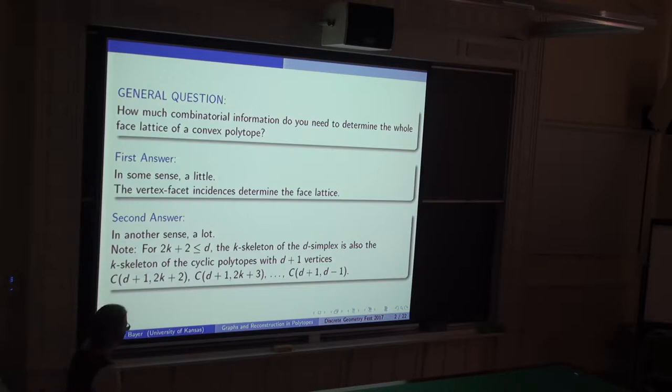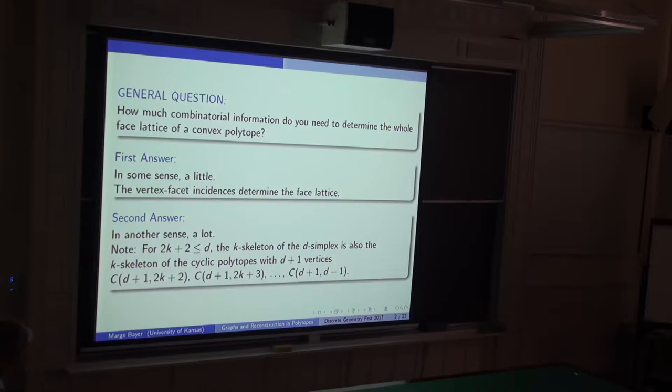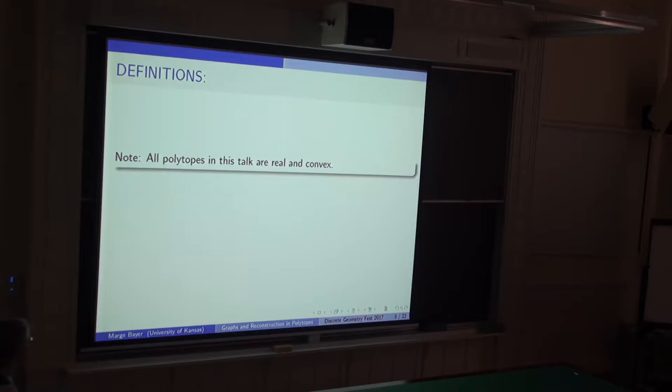From that perspective, you need quite a lot of information. For example, if you take k less than d/2 and look at the k-skeleton of a d-simplex, that is also the k-skeleton of many other polytopes — namely the cyclic polytopes of dimension less than d. The cyclic polytopes with d+1 vertices will have the complete graph as their graph, and their k-skeleton will be the k-skeleton of the d-simplex.